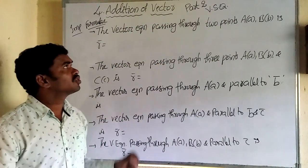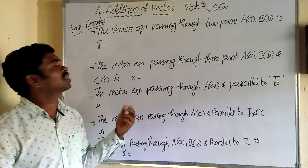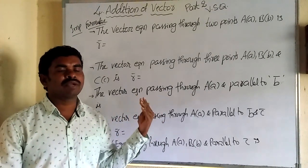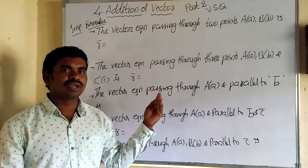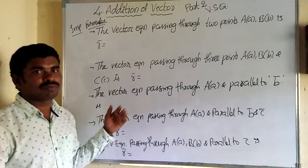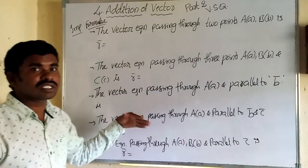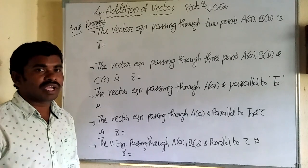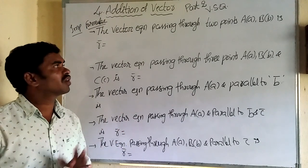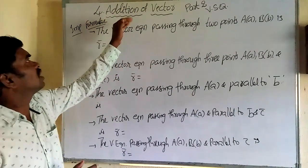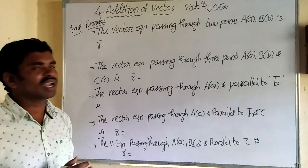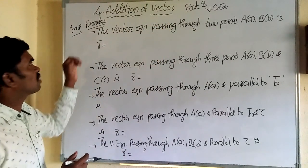In Part 1, we discussed the introduction: what are additional vectors, what are the main points, how to find a unit vector, how to find lambda and mu values when two vectors are collinear. Part 2 is a continuation of Part 1. Through both parts, we can complete all two-mark questions and easily get 2+2 marks. In this chapter the syllabus includes two 2-mark questions and one 4-mark question.